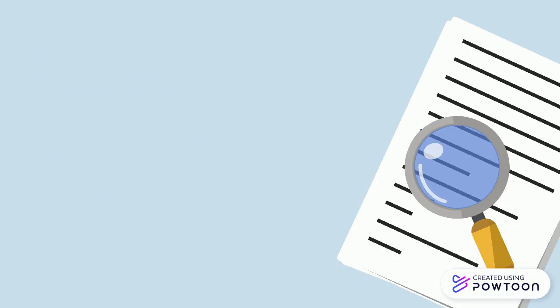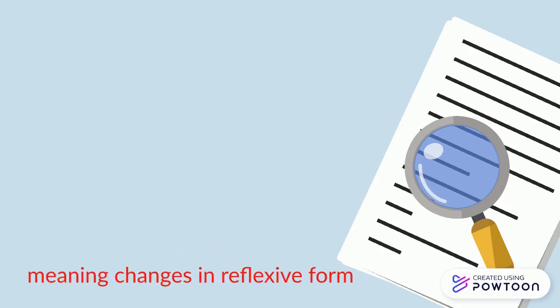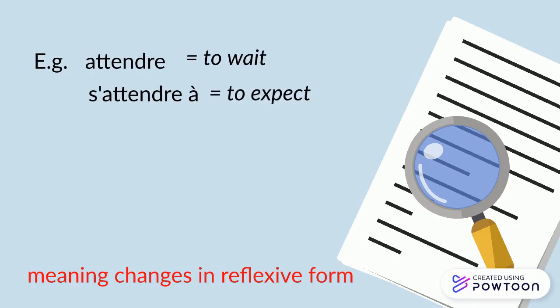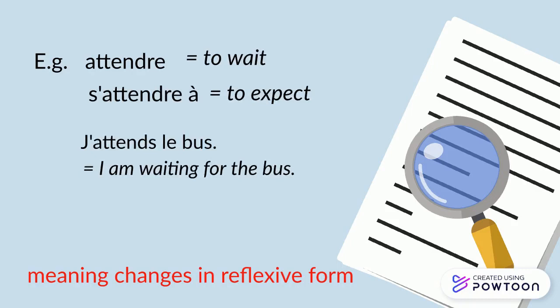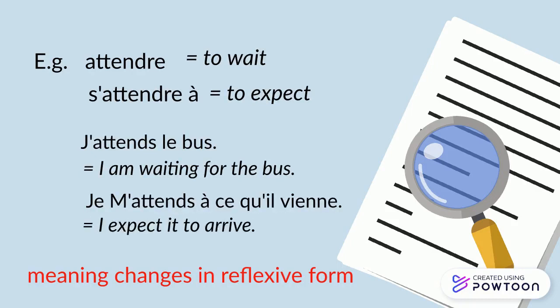The meaning of other verbs changes in the reflexive form. For instance, attendre means 'to wait,' but s'attendre à means 'to expect.' For example, j'attends le bus — I'm waiting for the bus — versus je m'attends à ce qu'ils viennent — I expect them to come.